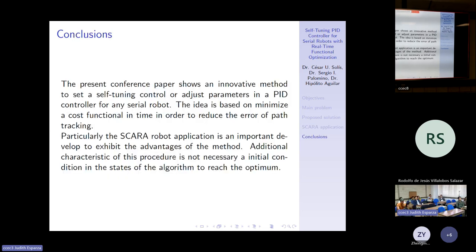Conclusions. The present conference paper shows an innovative method to set a self-tuning controller or adjust parameters in a PID controller for any serial robot. The idea is based on minimizing a cost functional in time in order to reduce the error of the path tracking.